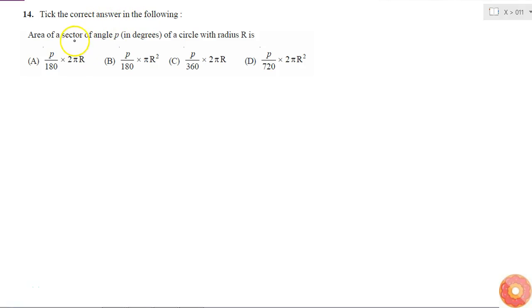Tick the correct answer in the following: area of a sector of angle P in degrees of a circle with radius R is which of the following options? We all know that area of sector is equal to, if the angle is P degrees, that will be equal to P by 360 into pi R square, correct? Because...